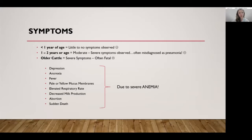These animals may have an elevated respiratory rate as well as decreased milk production if they're in lactation, abortion if they're pregnant, and sudden death. All of these symptoms are a direct result of severe anemia — the loss of functional red blood cells due to their destruction by the Anaplasma organism. A low red blood count causes elevated respiratory rate and depression, which is why in yearling heifers, it's most commonly misdiagnosed as pneumonia.